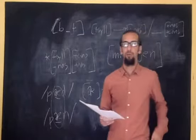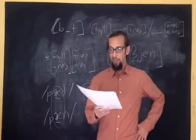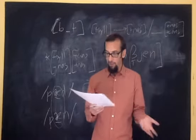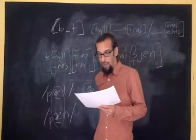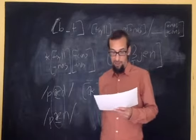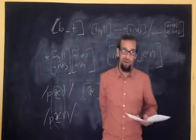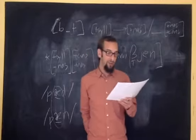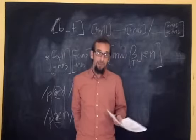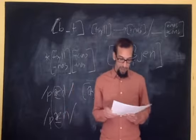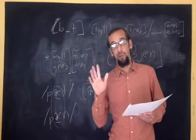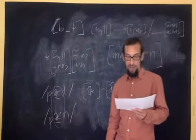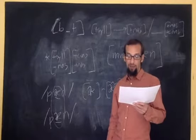There is one more kind of distribution here, although that was all the really tricky stuff. We talked about features that are not contrastive and the same in every environment, features that are not contrastive but differ in different environments, and features that are contrastive in some environments but predictable in others. The last possibility, at least for this class, is features that are contrastive in all environments.